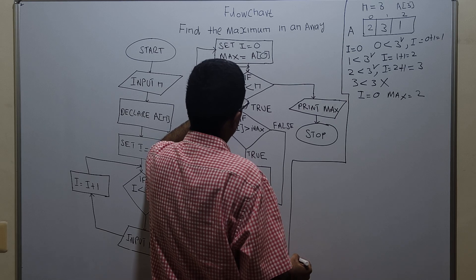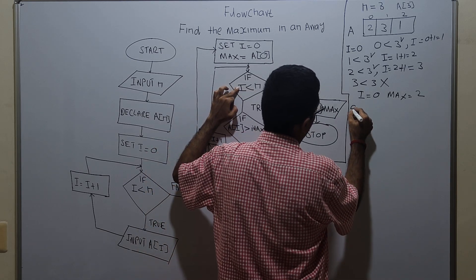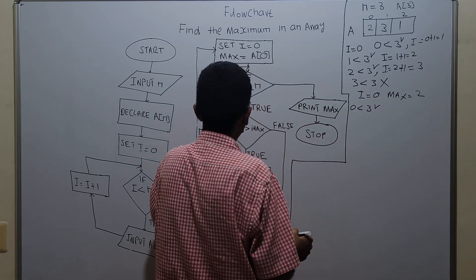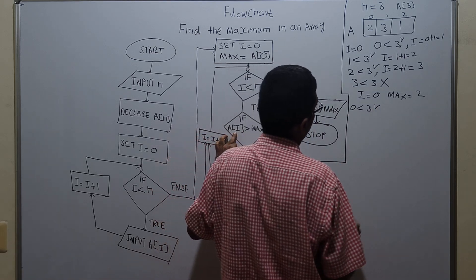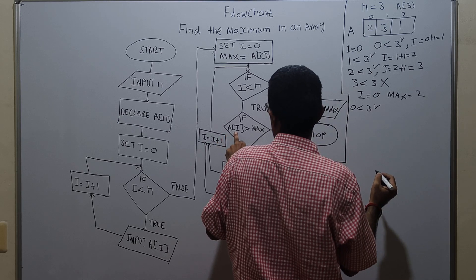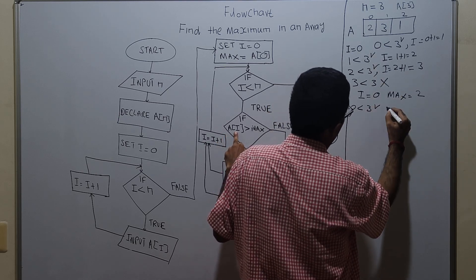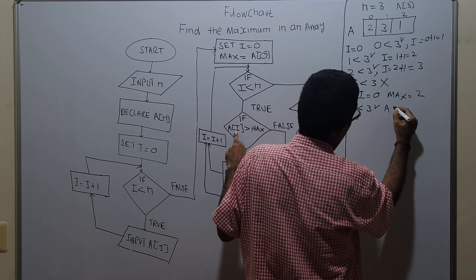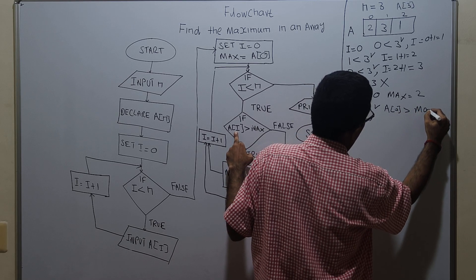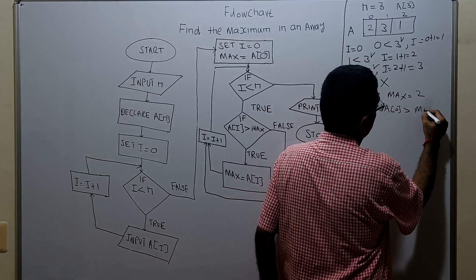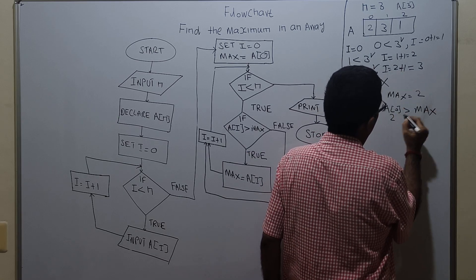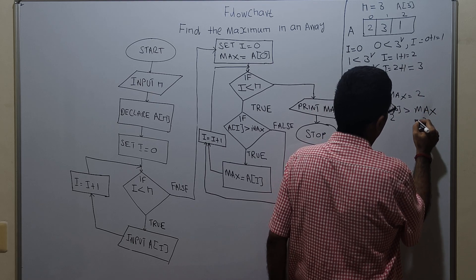Set i equal to 0. Max equal to a of 0 — the value is 2, so max equals 2. We check i less than n: 0 less than 3, which is true. We check a of i greater than max: a of 0 is 2, max is 2 — 2 greater than 2 is false.